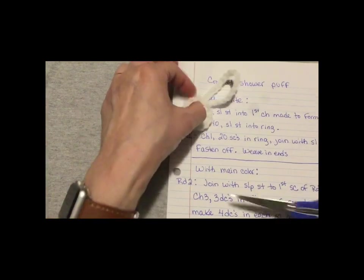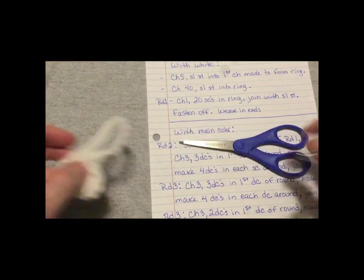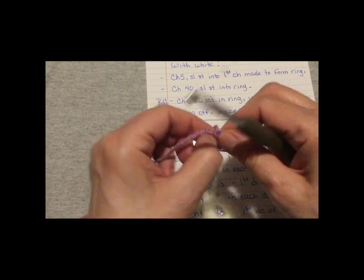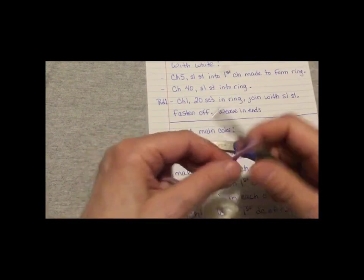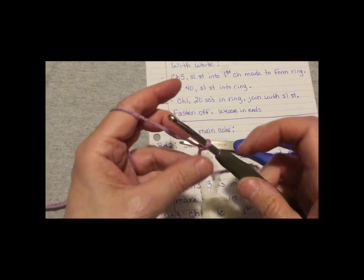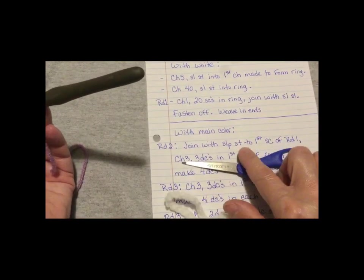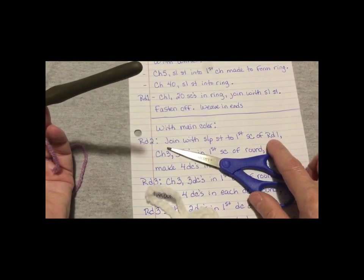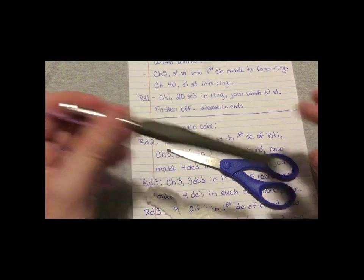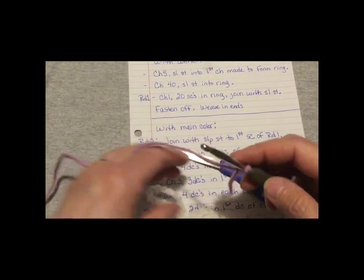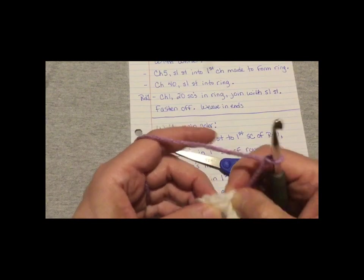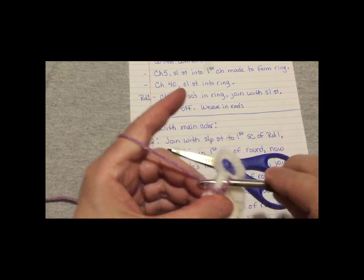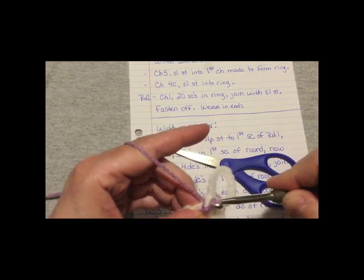Now we're going to do the main color. And I chose purple. It's called orchard. Do my slip knot on that hook. Join with slip stitch to first single crochet of round. Here's my first one, and slip stitch. There we go.